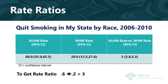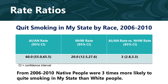In the chart below, the final column on the right has an example of a rate ratio. Remember, 60% of the people who stopped smoking in my state from 2006 through 2010 were native, and 20% were white. To get the rate ratio, they divided 60% by 20%, or 0.6 by 0.2, which equals 3. That means that from 2006 through 2010, native people were three times more likely to quit smoking in my state than white people.